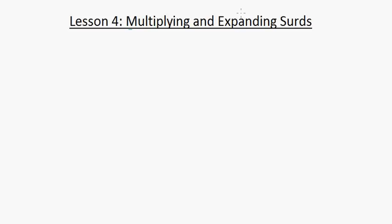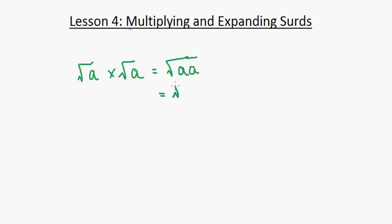Let's start with notation. If we are given root a times root a, this equals a. You could write this as root a squared, but when you square root a squared, the square root and the square cancel out, so you're left with a.